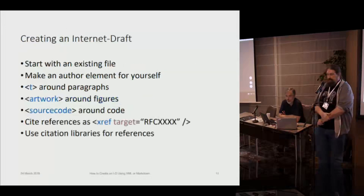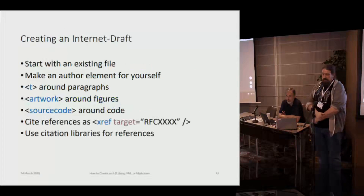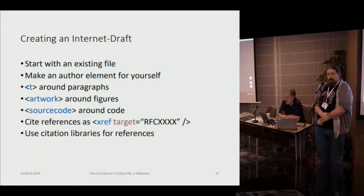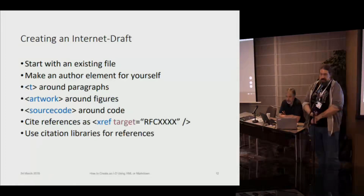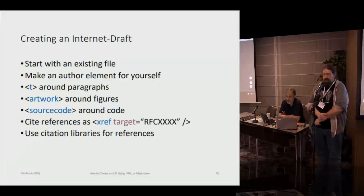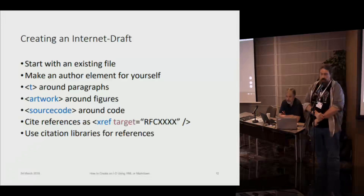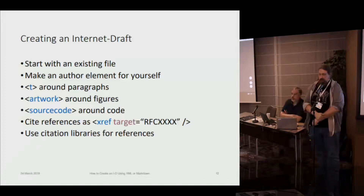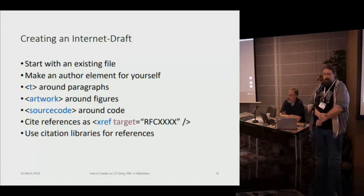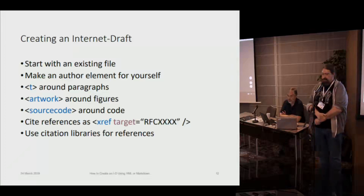Creating this internet draft: you start with an existing file, make your author element for yourself. Within your text, you'll wrap your paragraphs around a T or text element. Any artwork you would put in there, you would wrap with an artwork element. Source code goes in a source code element, and citations go in an xref. We'll go over the details of citation references.